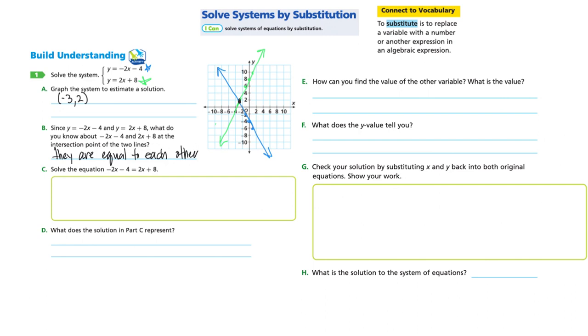So solve the equation. They set the two equations equal to each other. So we have negative 2x minus 4 equals 2x plus 8. They were saying before, remember, y equals this and y equals this. Well, y equals y. So we can set those two expressions equal to one another. And that's what they're explaining here in the vocabulary.